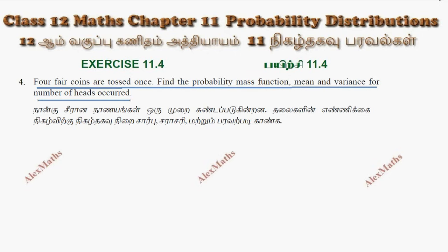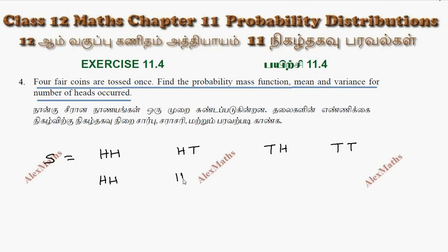For the sample space, we have S equal to: HH, HT, TH, TT — listing all possible outcomes.